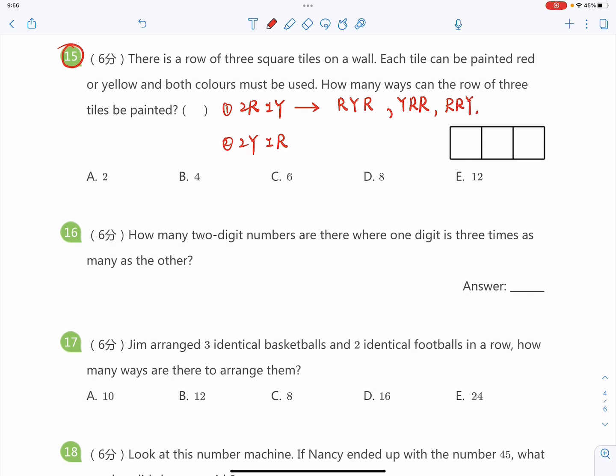For this question, because it tells you it's a wall, that means you cannot do the rotation, right? And that means you got three of that. So far, you will see for this two red and one yellow, you got three ways.